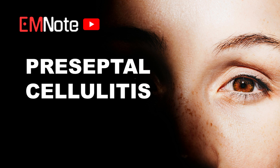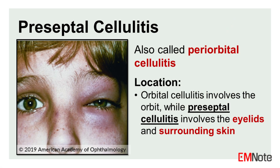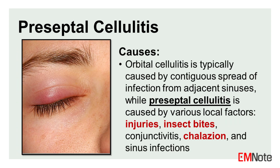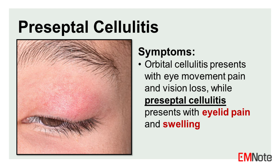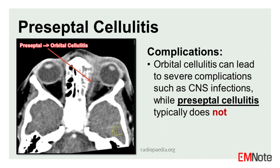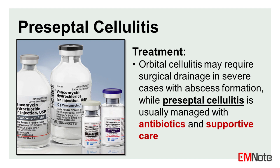Preseptal cellulitis and orbital cellulitis are two distinct infections involving the eye area, differing in their location and severity. Preseptal cellulitis affects the eyelids and soft tissues anterior to the orbital septum — the membrane separating the eyelids from the eye socket. Common causes include injuries, insect bites, conjunctivitis, chalazion, and sinus infections. Symptoms typically involve eyelid swelling, redness, pain, and tenderness without vision issues or eye movement restriction. It generally follows a benign course and is treated with antibiotics and supportive care.